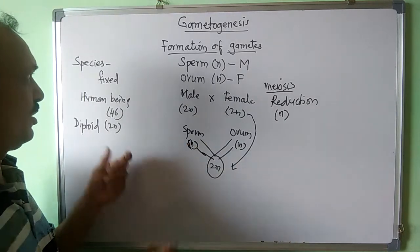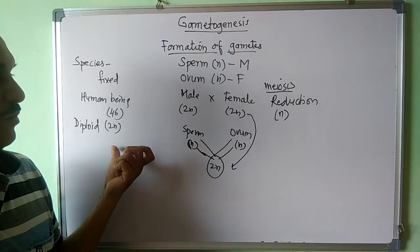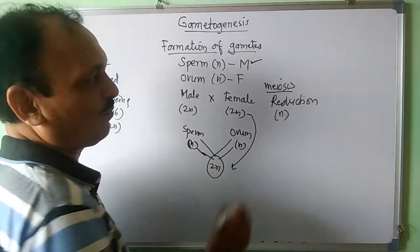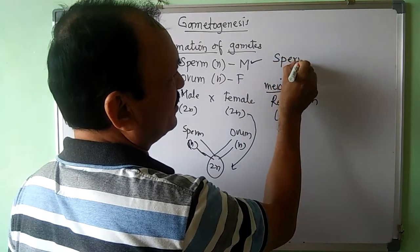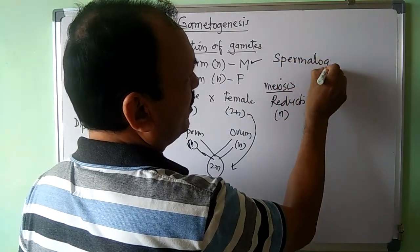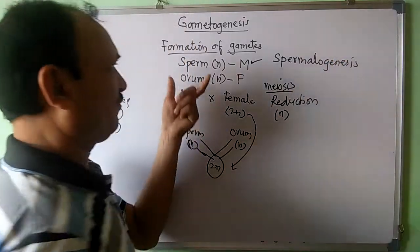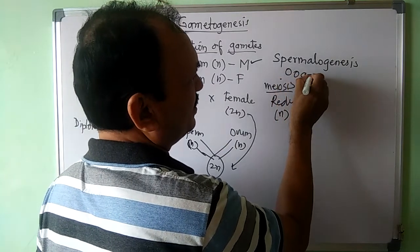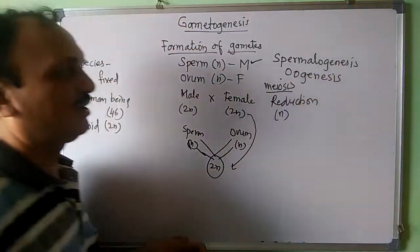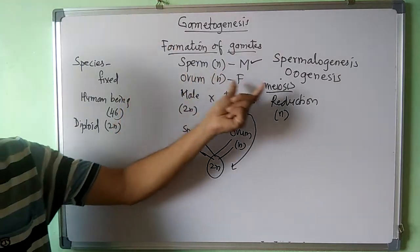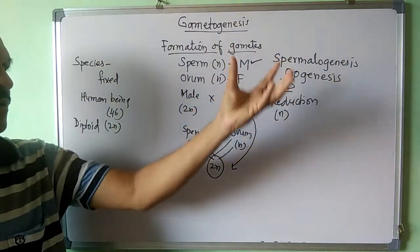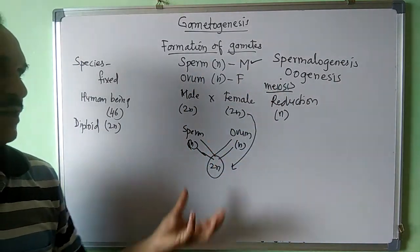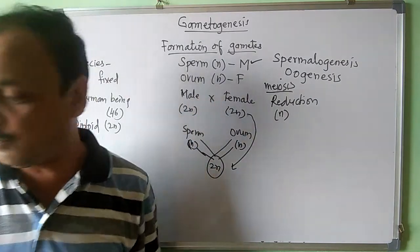Gametogenesis is of two types. For sperm formation it is called spermatogenesis, and for formation of the egg or ovum it is called oogenesis. So these are the two types of gametogenesis: spermatogenesis means to form sperm, and oogenesis means to form the ovum or egg cell. Today we will study spermatogenesis.